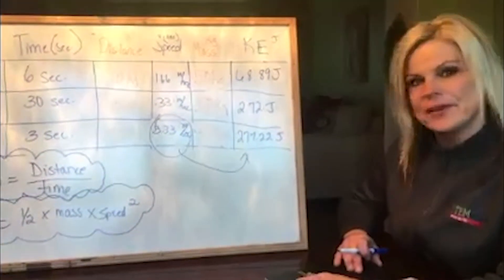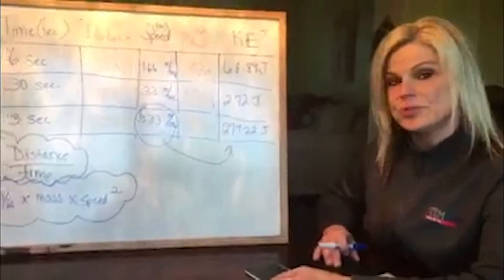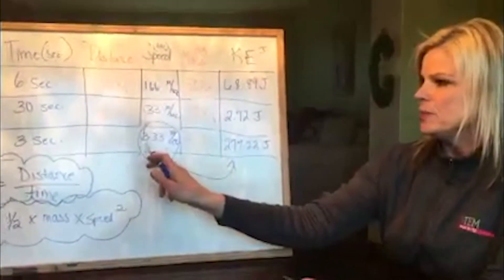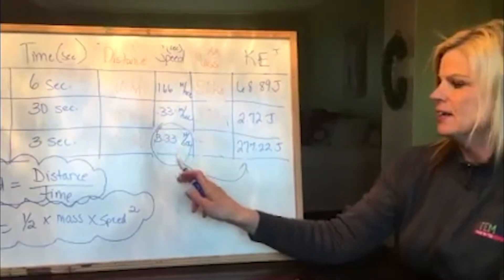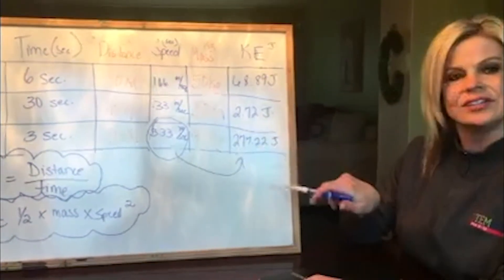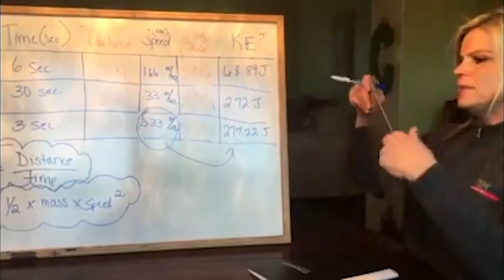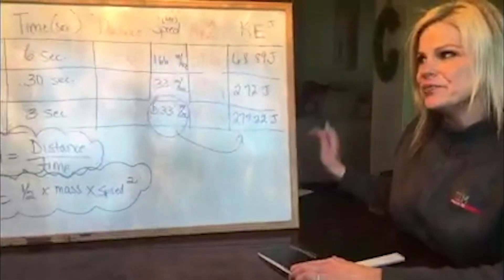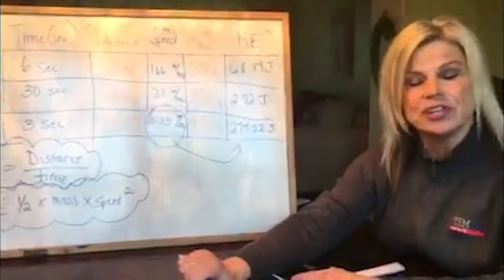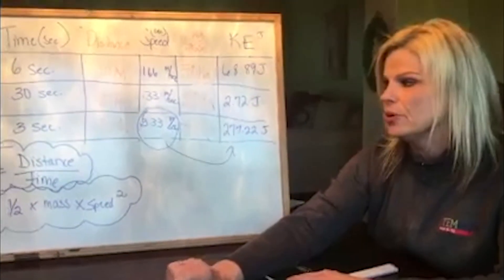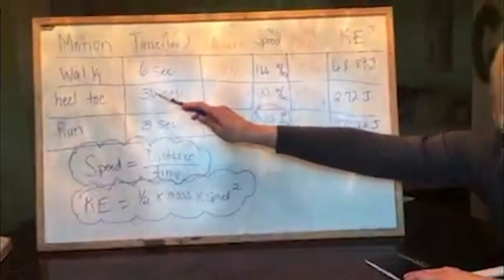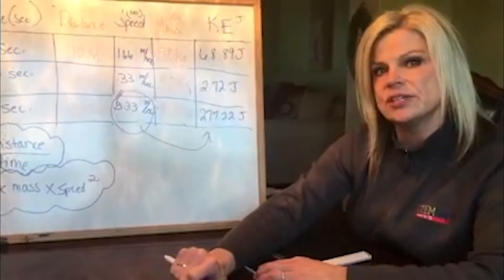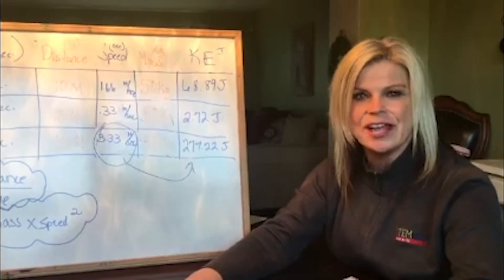I've given you some time to think about the data. Hopefully you're seeing this relationship between speed and kinetic energy. My greatest speed was when I ran, which was 3.33 meters per second, and the greatest amount of kinetic energy used was 277 joules. That means the greater the speed, the more kinetic energy used. My challenge to you now is: what if you were to add weights to each motion — do you think the kinetic energy used would change, and how? Or can you do different motions to test this? I hope you had as much fun as I did learning about kinetic energy and its relationship with speed.